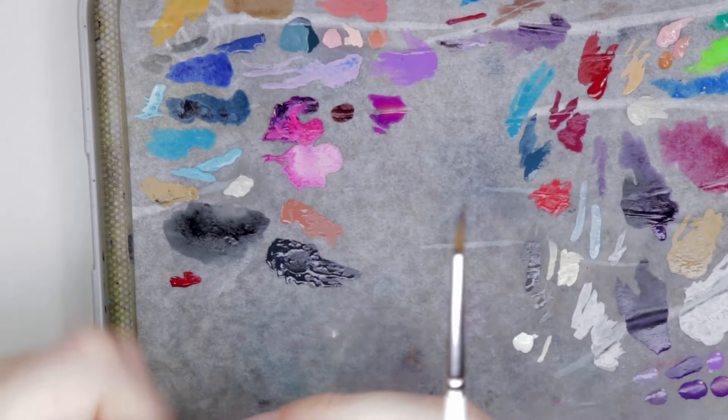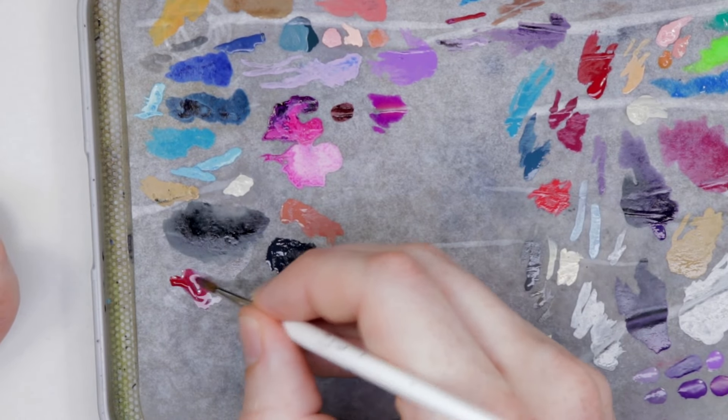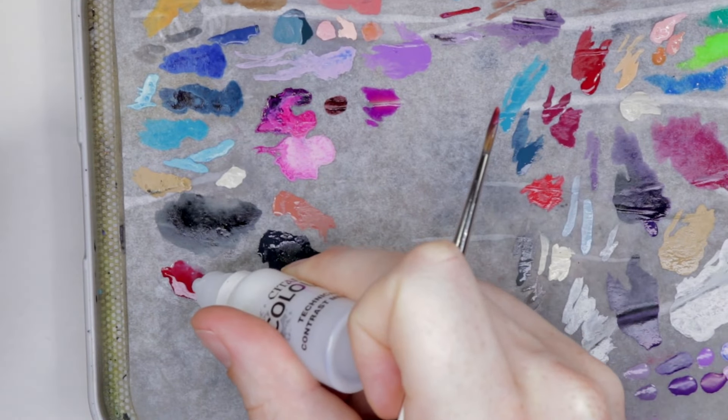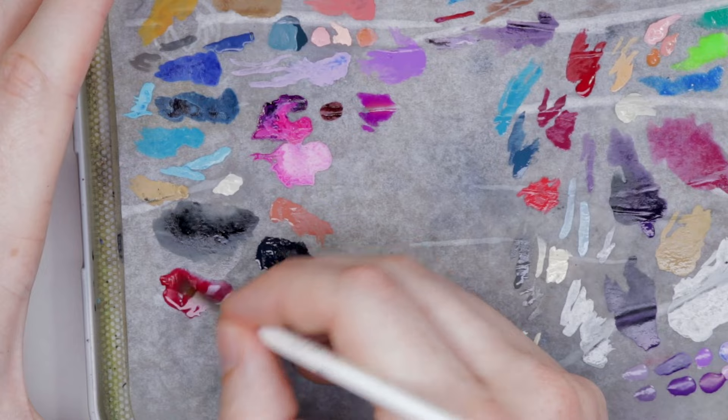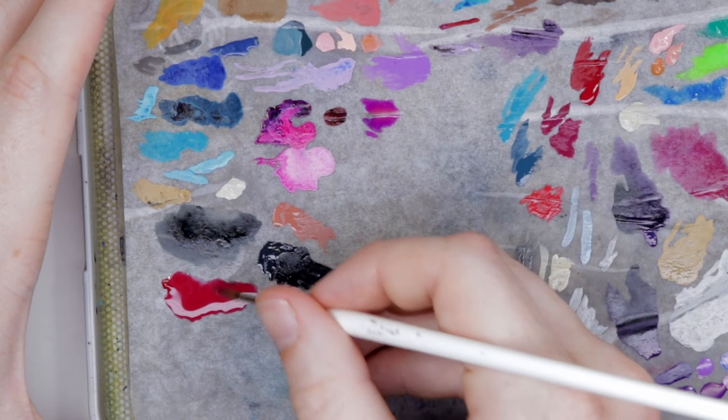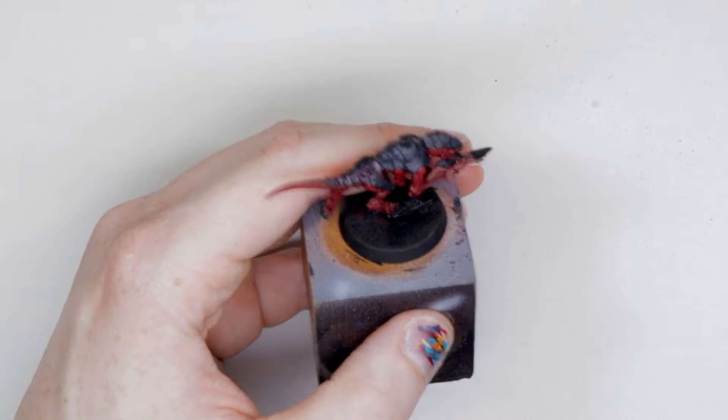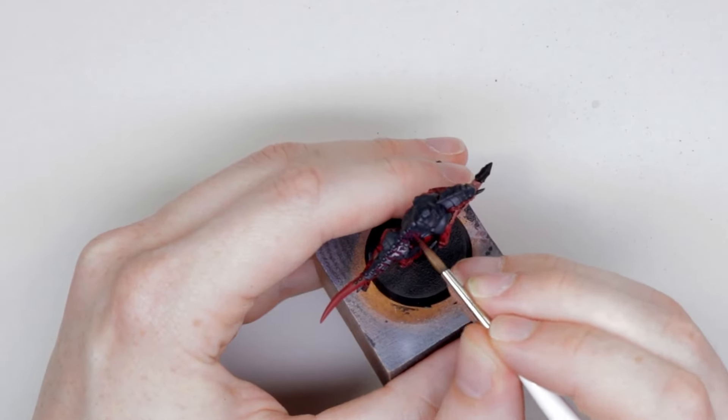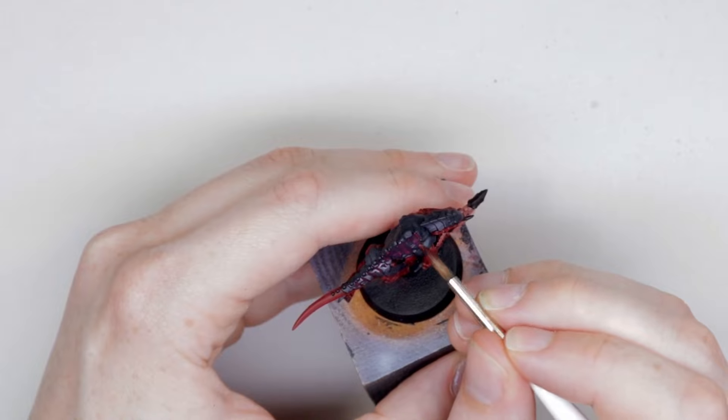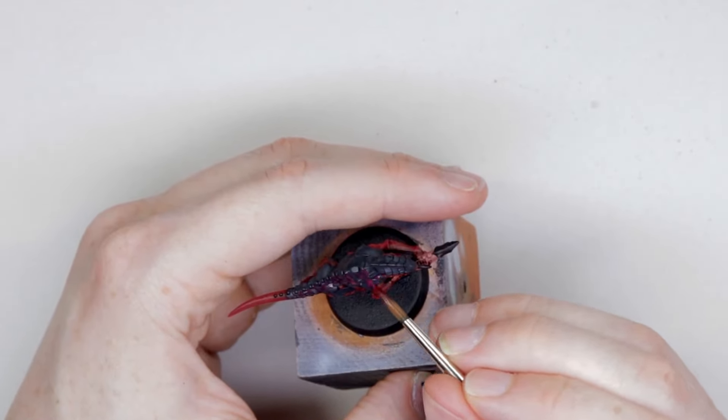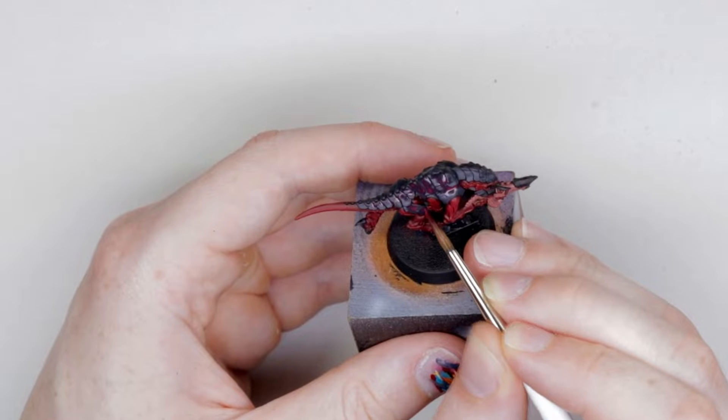Next, we're going to grab Khorne Red and Contrast Medium and make this into a very light wash. We're going to use this to stain those armor panels to get that red transition from the gray to the red that you get on the chitin panels for Leviathan. You can see the consistency there. It's about a small dab of it on the end of my brush onto the palette, and then I do two drops of Contrast Medium. It's very thin. We're going to just paint that onto the armor panels using a sort of stippling motion.